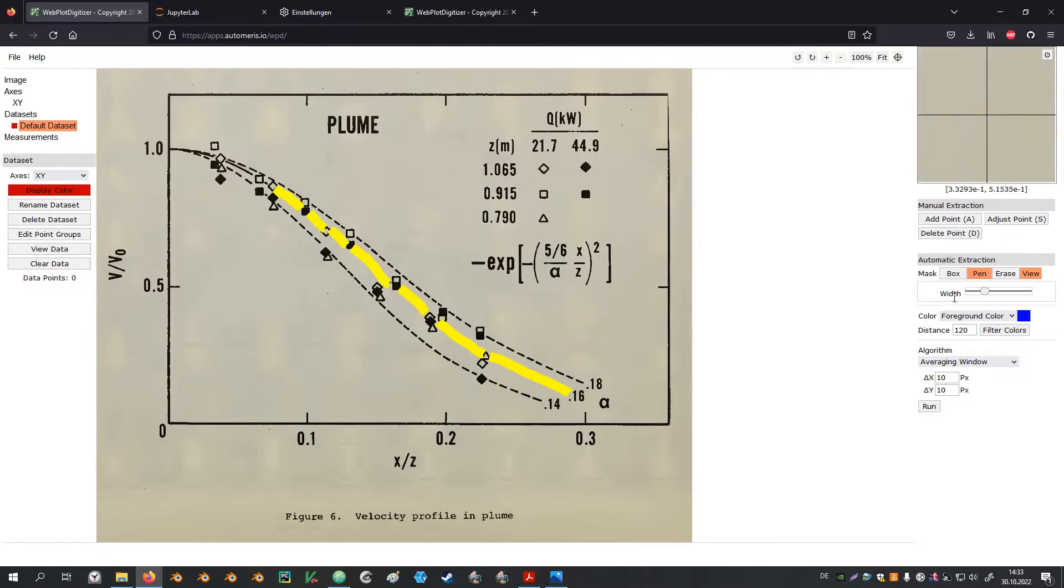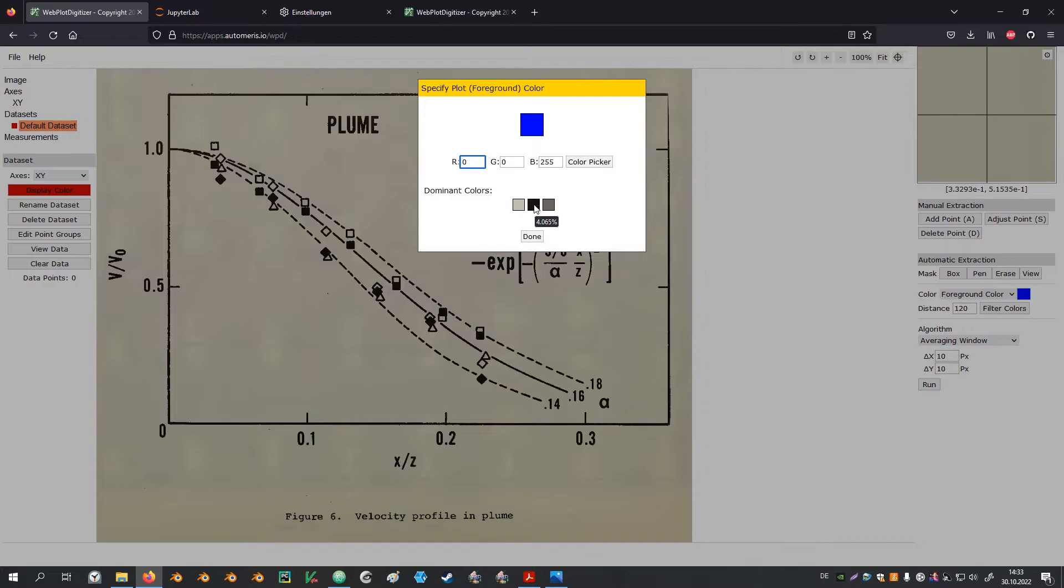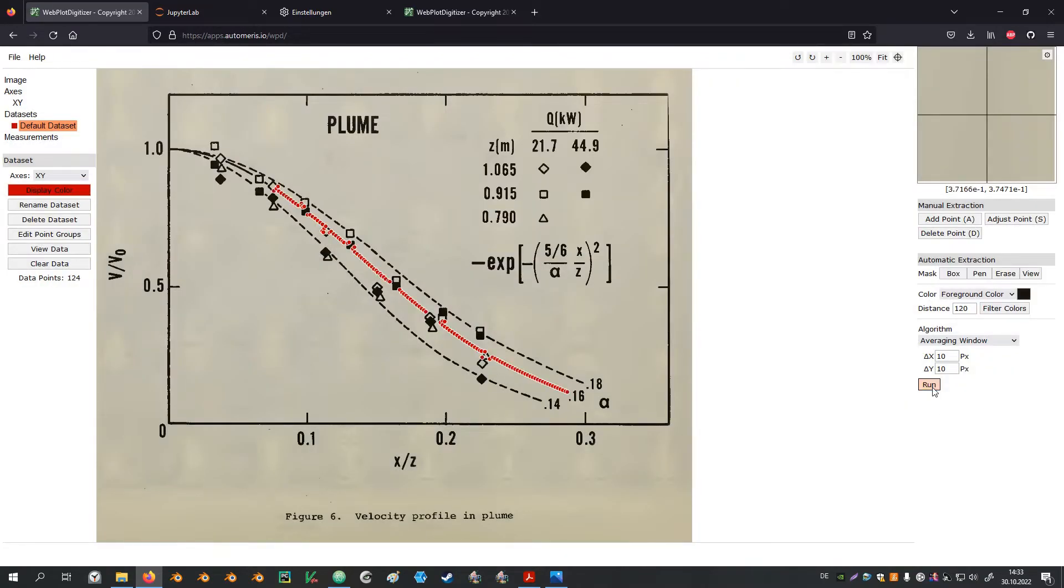Next the foreground color needs to be specified. This is the color in which the line is drawn that we want to extract from. In our case it's just black. Now we can hit run and we see a lot of points have been drawn on the plot. The number of points can be adjusted by changing the pixel step size here with delta x and delta y. For instance let's try 15. Hit run again. These fewer points look a little bit better. Maybe we can even go to 20. Yeah much better.